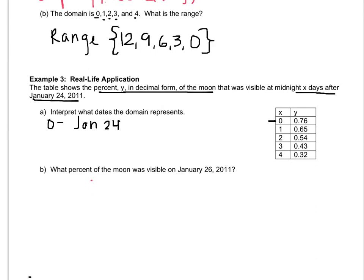What do you think 1 represents? January 25th. 2 represents January 26th. 3 represents January 27th. And 4 represents January 28th.